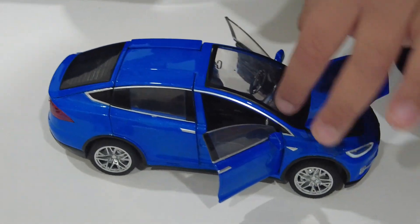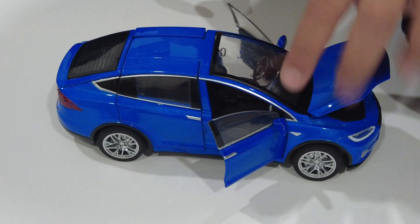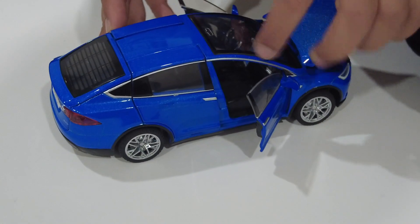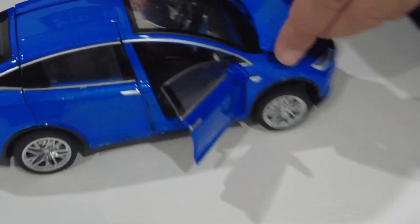Now it's the driver's seat and the passenger seat. They're also very detailed. And it even has the map on the screen.